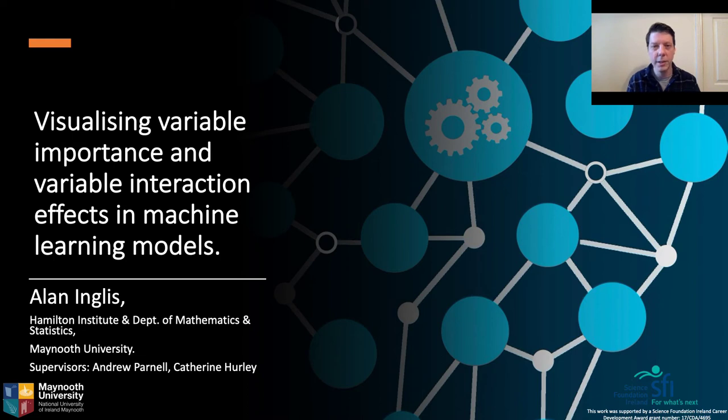Hi, I'm Alan Inglis from the Hamilton Institute in Maynooth University, Ireland, and today I'd like to briefly talk about visualizing variable importance and variable interaction effects in machine learning models.